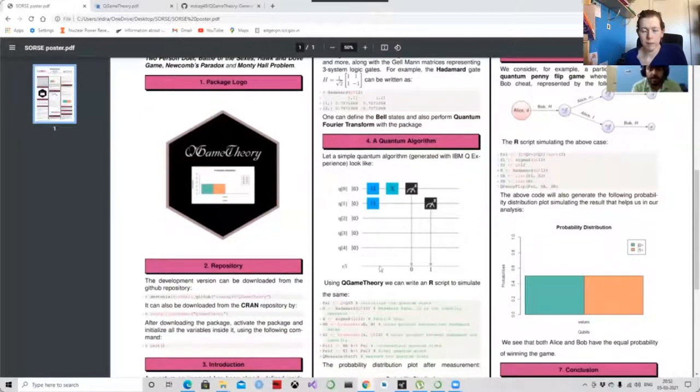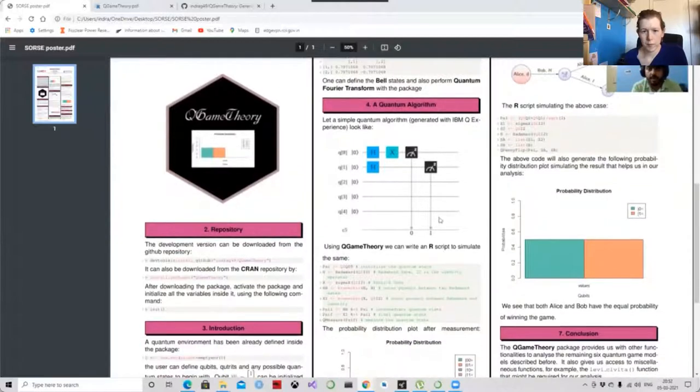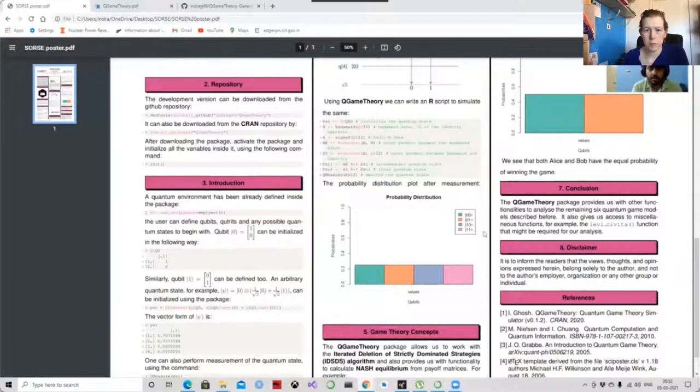Suppose here this is one of the quantum algorithms that I have generated using the IBM Q-Experience. And I have just transformed this algorithm, this circuit model, into the R code using this q-game theory package. And this is what I get, the probability distribution plot by using this code.